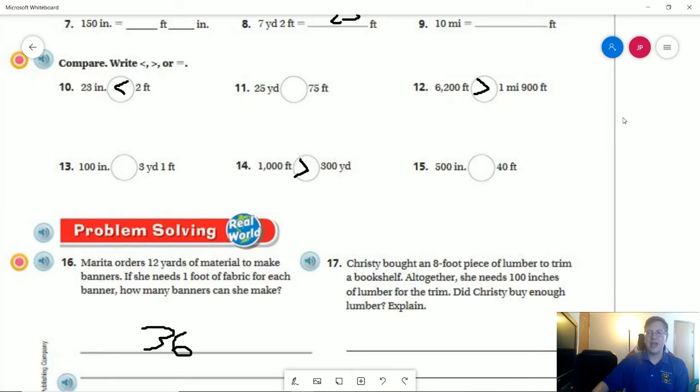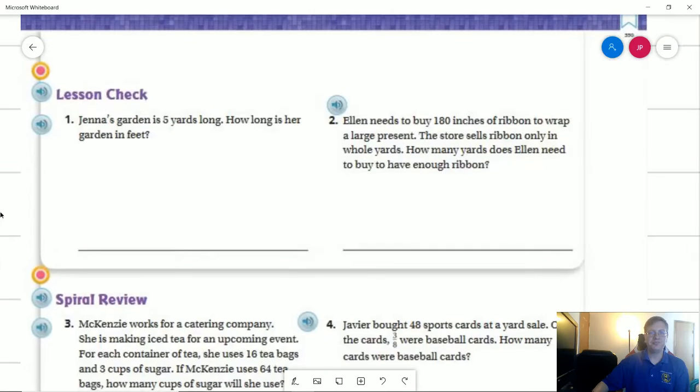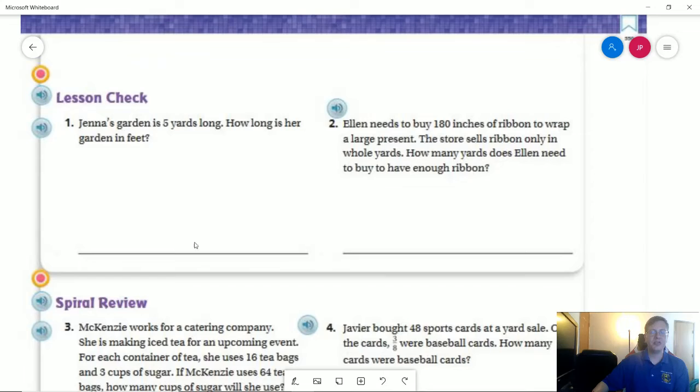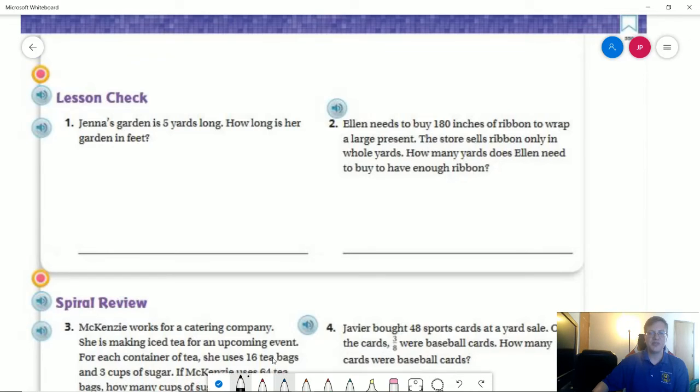Number one on the back, five yards long. How long is their garden in feet? Five times three would give me the answer. That would be 15 feet.